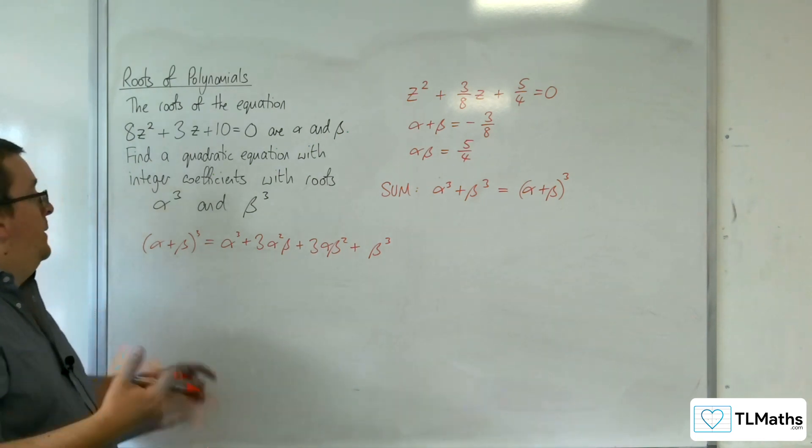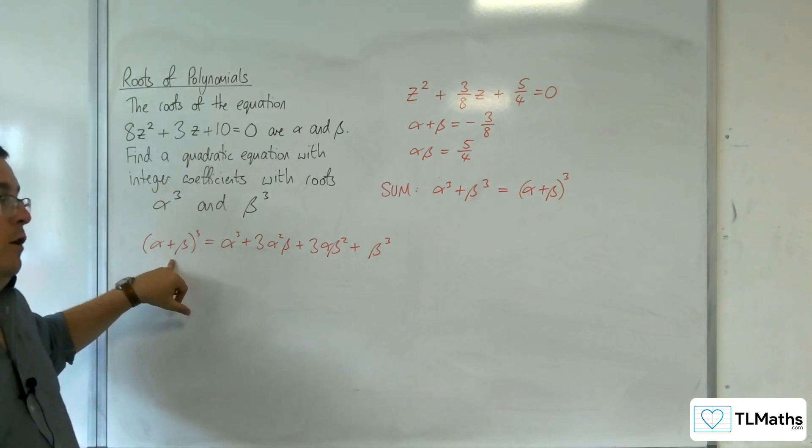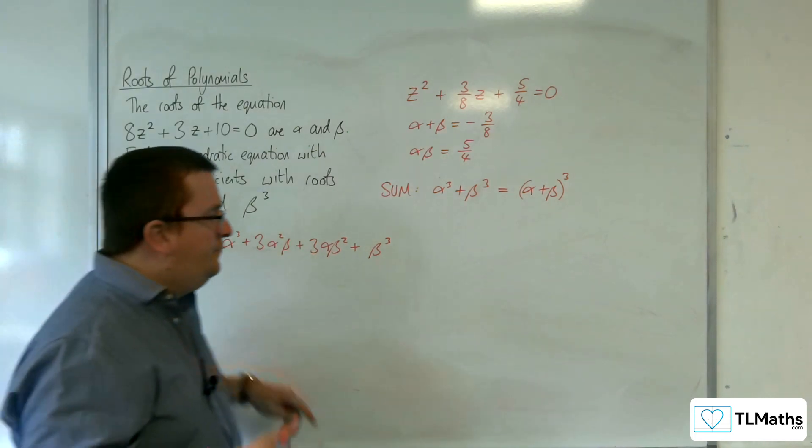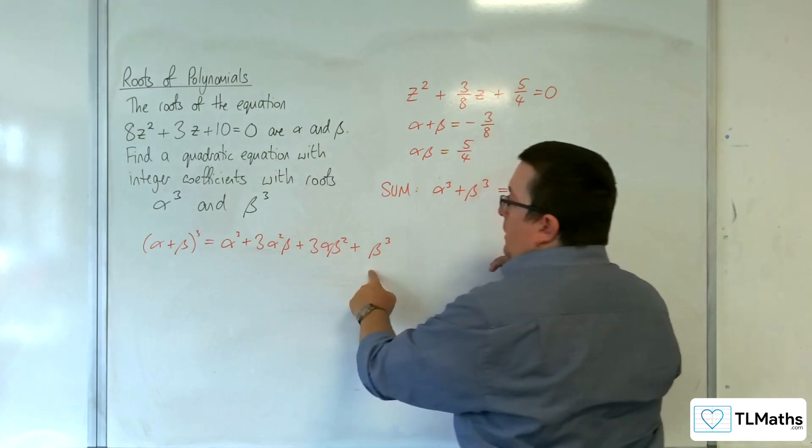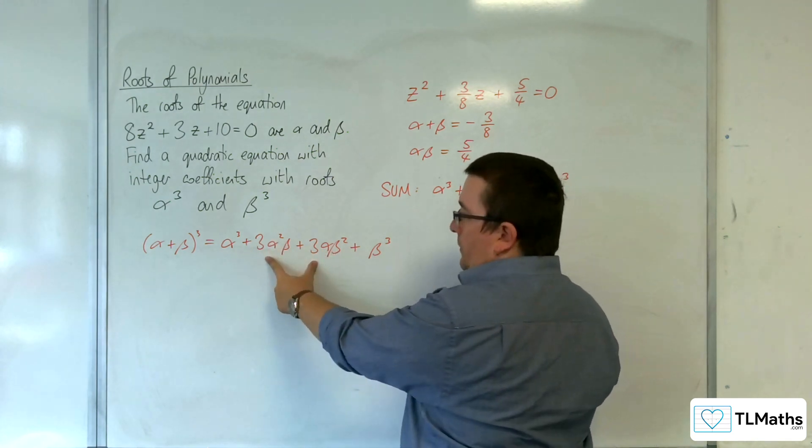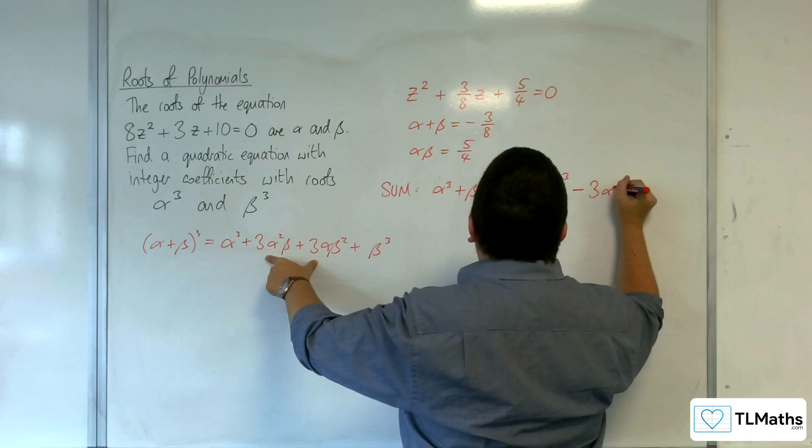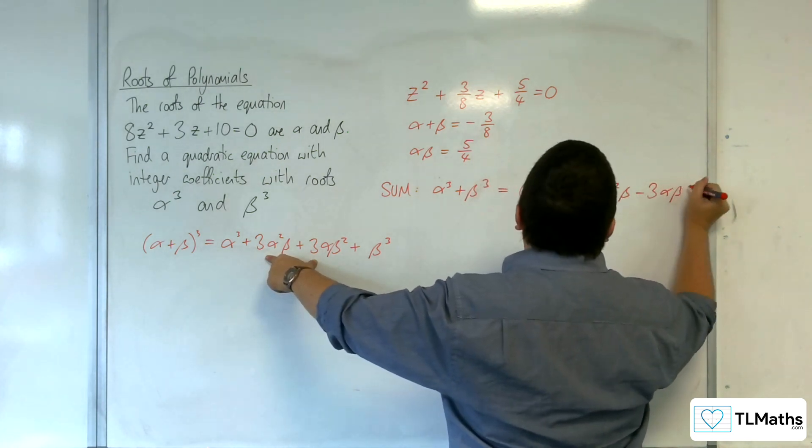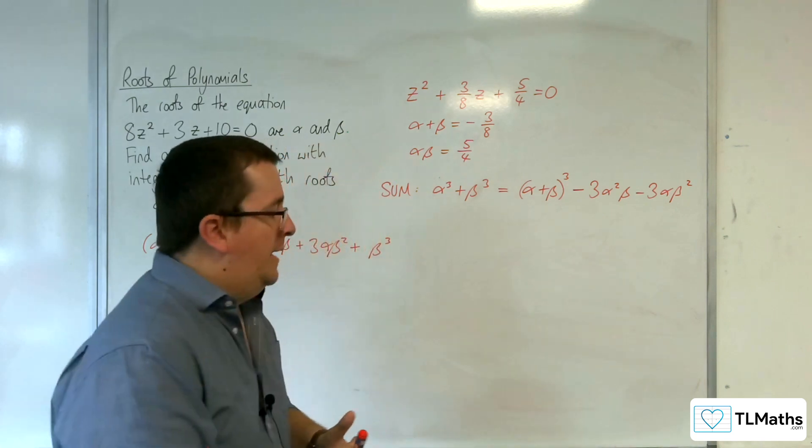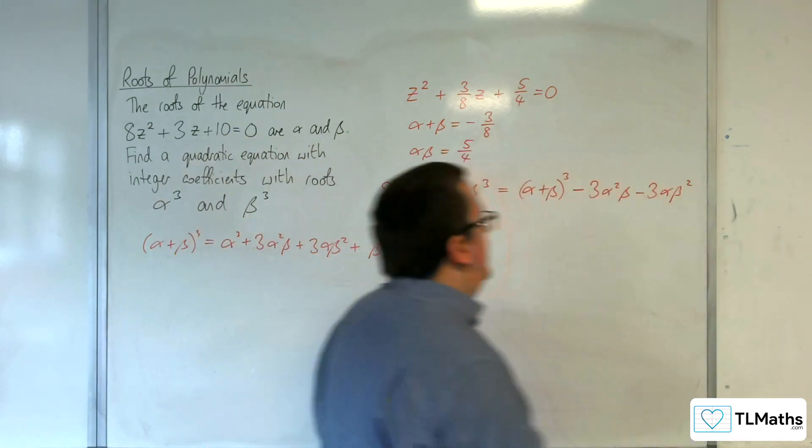If you haven't met binomial expansion, that's fine - you can expand the brackets out long-hand as well. I've got α³ and β³, but I've got these extra terms that I don't want. So I need to subtract 3α²β and 3αβ².